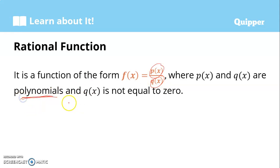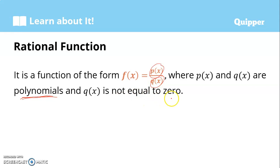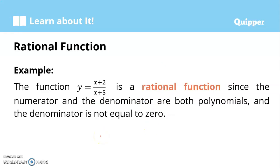When we say polynomials, the exponents of variable x should be a non-negative integer or whole number. So the exponent cannot be an x (exponential), cannot have a square root or radical, cannot have fractional exponents, and cannot have negative exponents of x. The second condition is that the denominator q(x) should not be equal to zero when simplified.